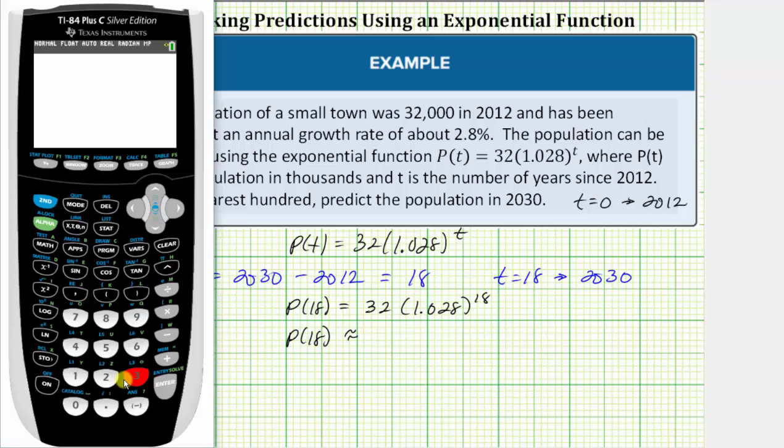We enter 32 and then in parentheses 1.028 raised to the power of 18. On this calculator, this is the exponent key. We press the exponent key, 18, and then press enter.